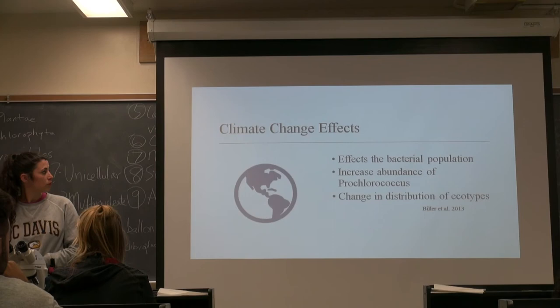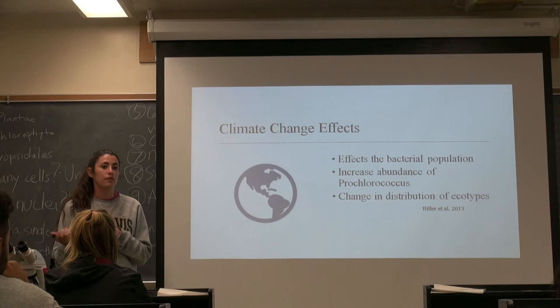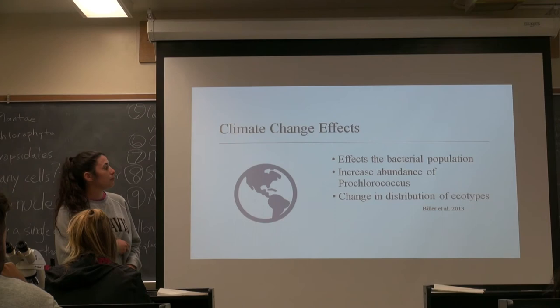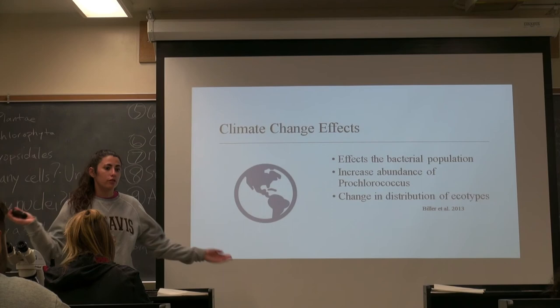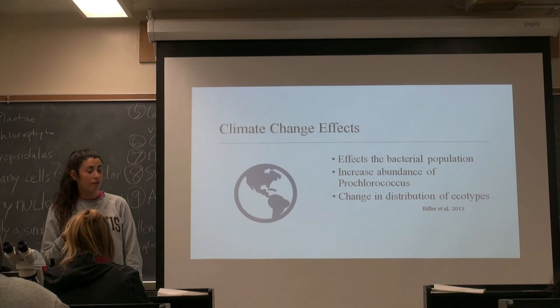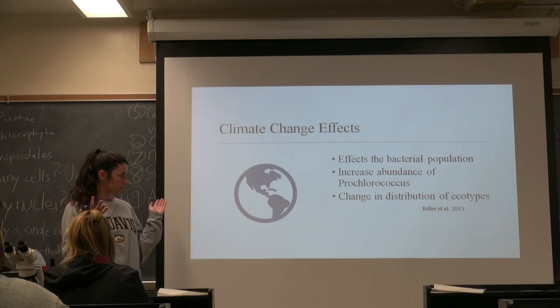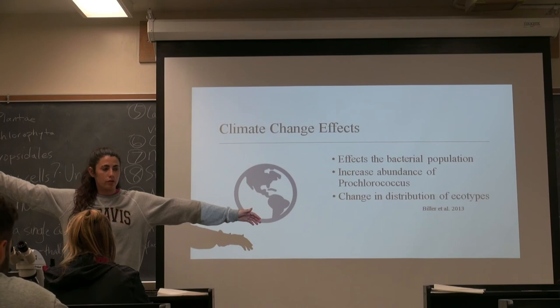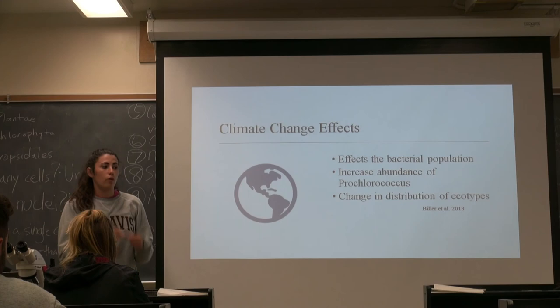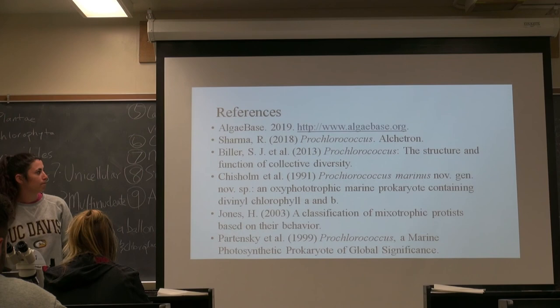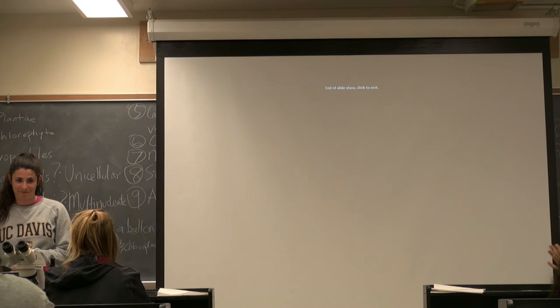One of the significances about this species is, like I said, it's very abundant and widespread, and it can be affected by climate change. As the water warms, the bacterial distribution of it will shift based on the high-intensity and low-intensity adaptive cells that they have. If the warming of the water increases, an increase in abundance of high-light-adapted ecotypes will occur. They will move out to the poles, and then the low-intensity cells will move away from the equator. Thank you very much.